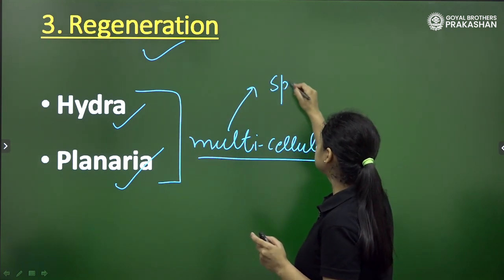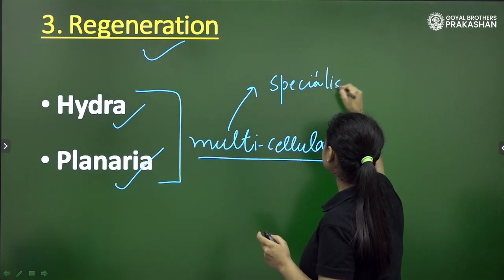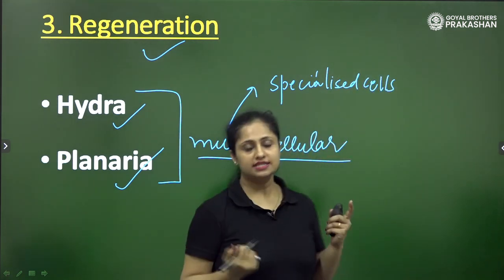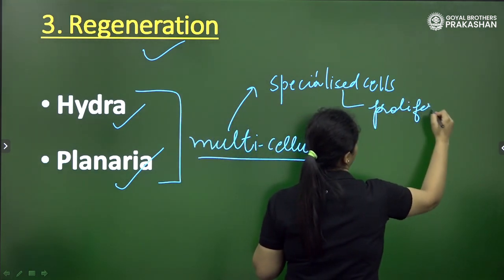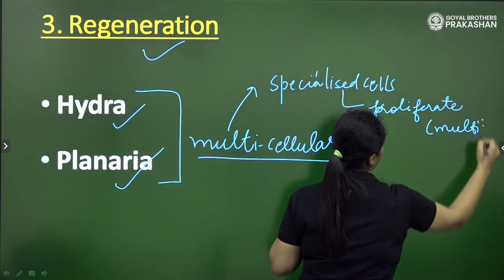are some specialized cells and these specialized cells are able to proliferate. Proliferate means they are able to divide or multiply.